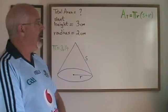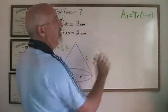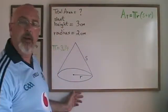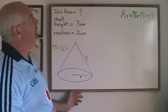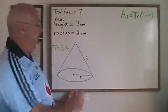The formula for total area of a cone is area total equals pi r times s plus r in brackets. The r stands for the radius of the cone and the s stands for the slant height.